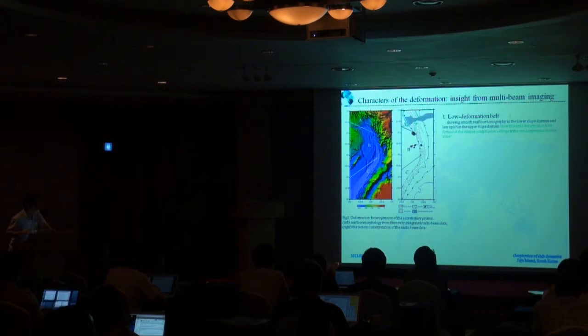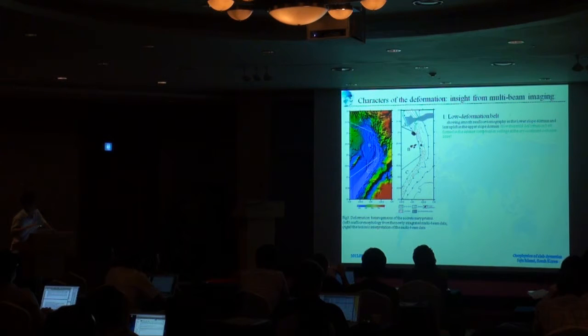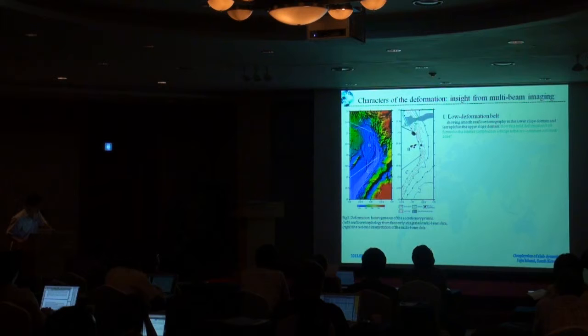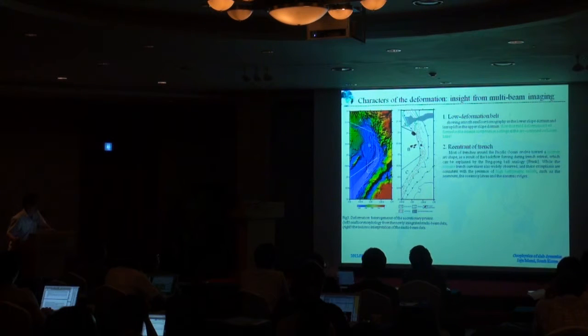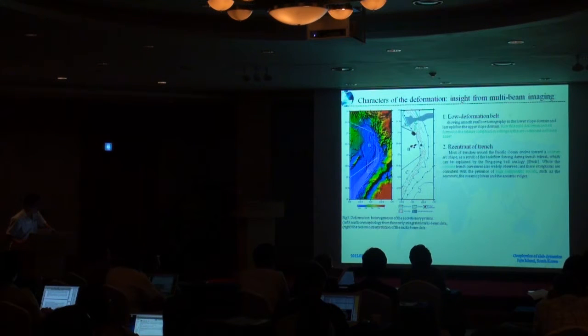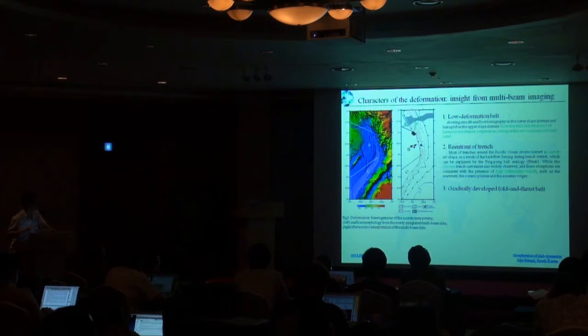The other special character of this area is the concave trench geometry. Because according to the ping pong ball analogy, most of the trenches are involved towards a convex arc shift, so this concave trench may be consistent with the presence of a high basement relief. The south part of the deformation is gradually developed fore-arc and thrust belt. It is a typical result of normal oceanic crust subduction.